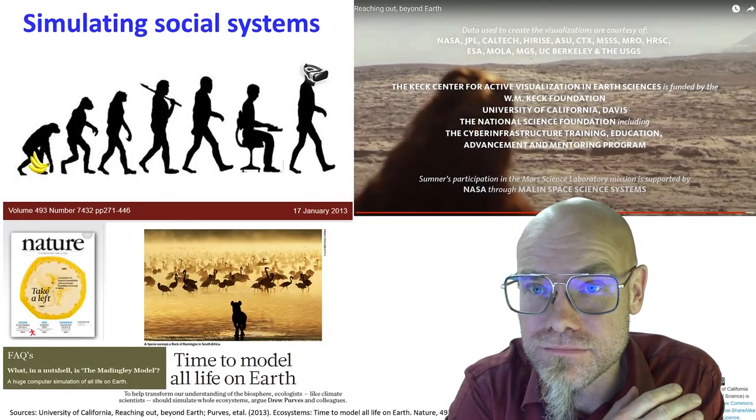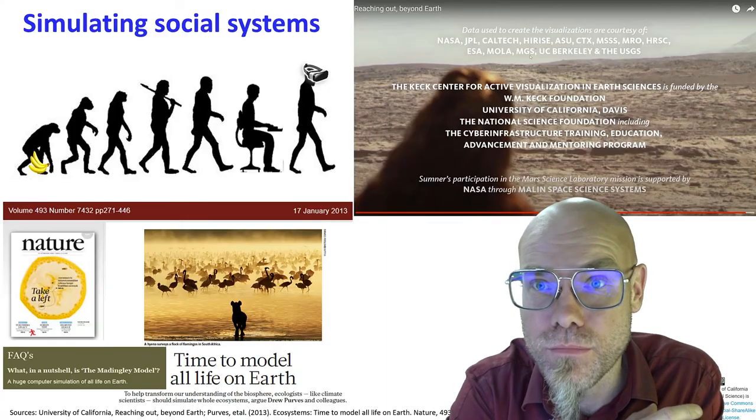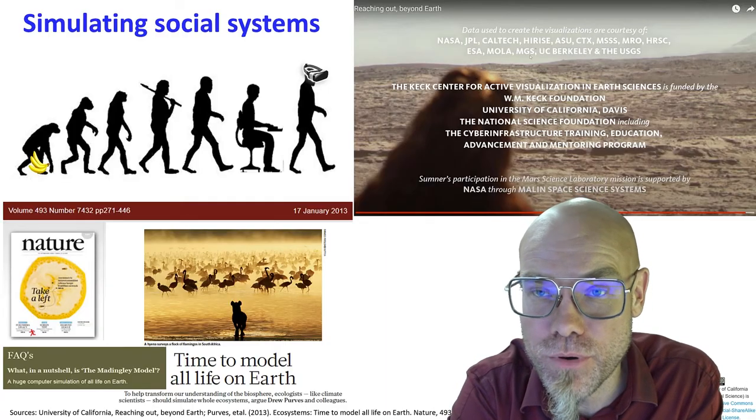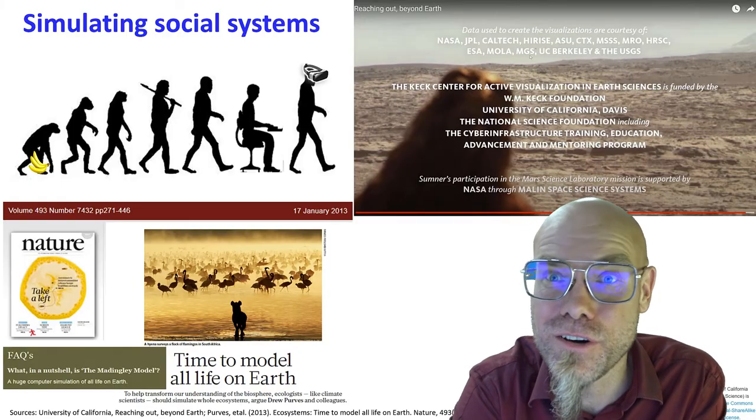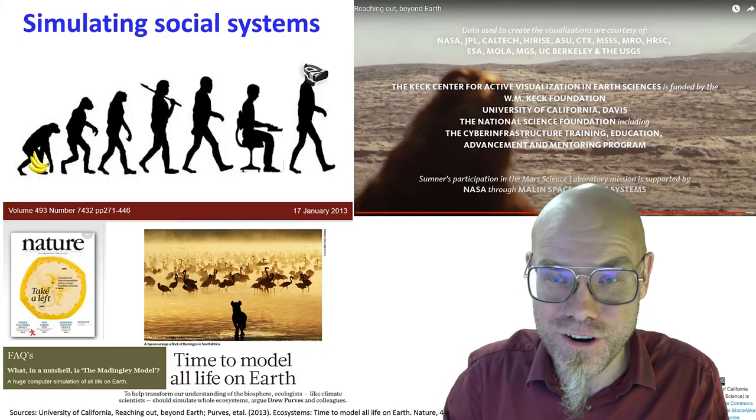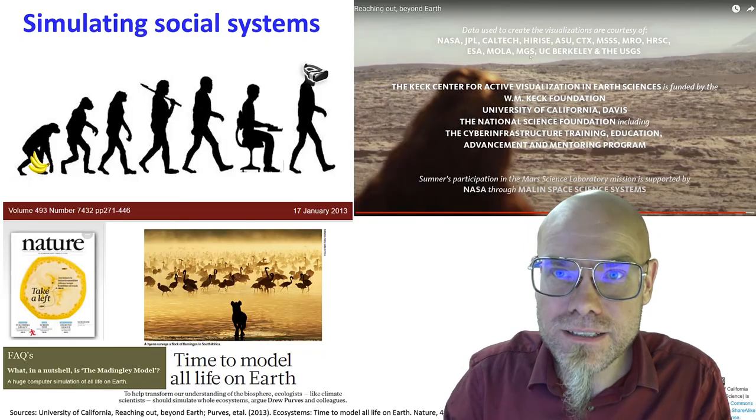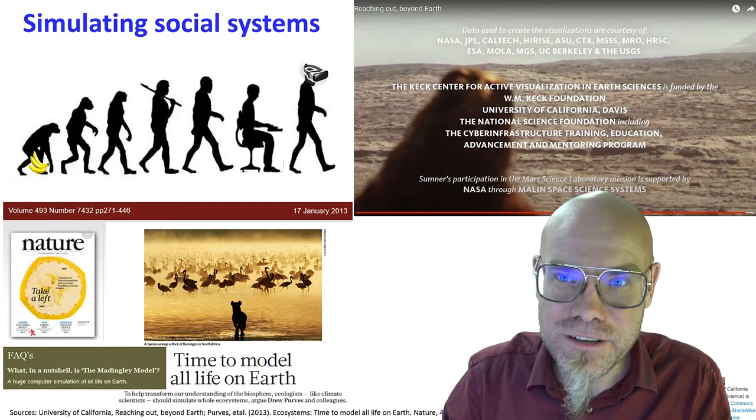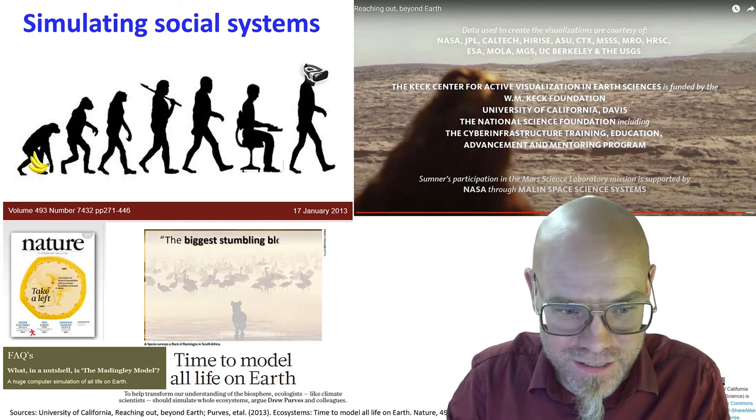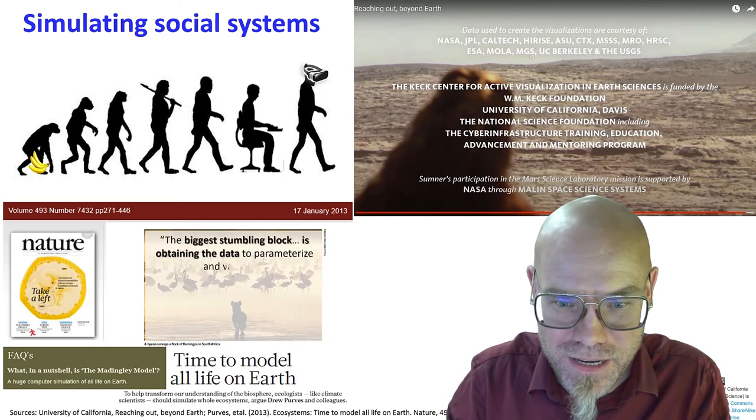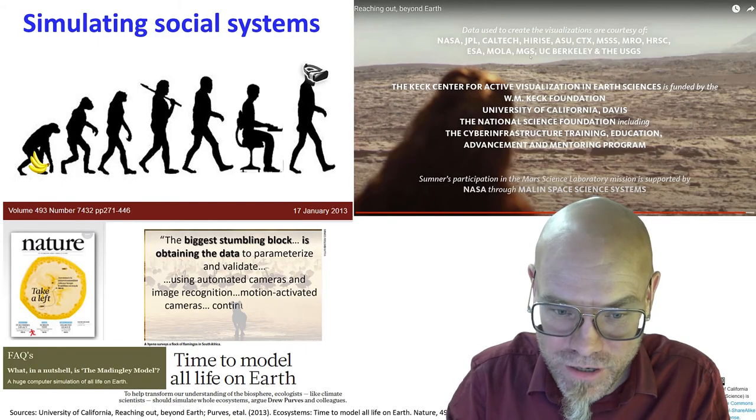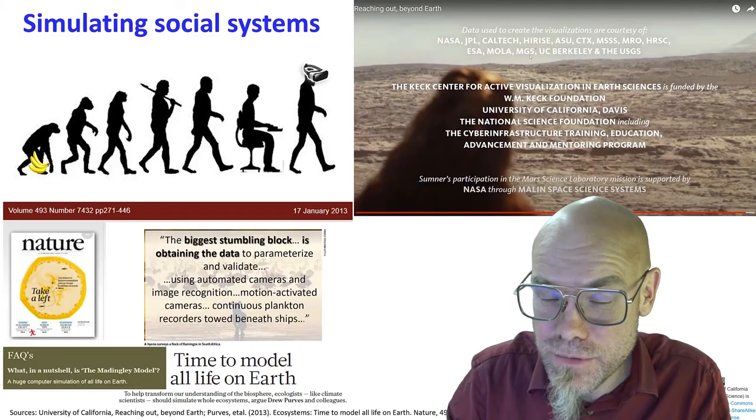And it doesn't stop here. There are efforts in science that aim to model all life on Earth. So every fish, every bird, every, well, we don't know, every insect. We really want to make a digital model of the universe. We have to start with Earth first. But you know what the problem there is? It's again, it's this two-way flow of data.